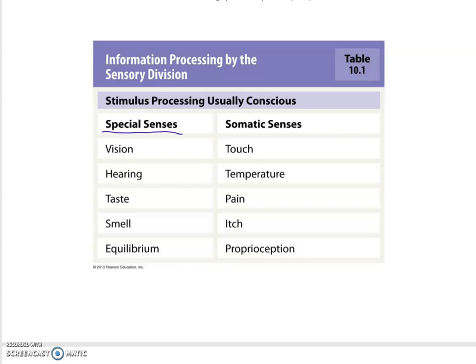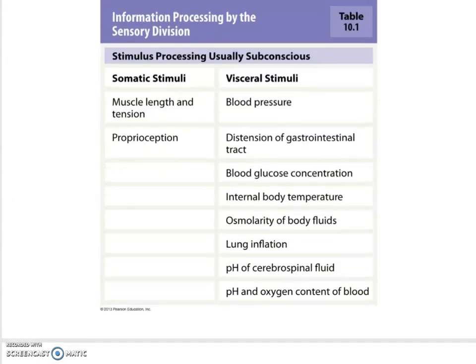The special senses are vision, hearing, taste, smell, and equilibrium. The somatic senses are body-wide senses that have no specialized location — they're all over: touch, temperature, pain, and proprioception. More somatic stimuli include muscle length and tension. Proprioception is the sense of body positioning. Visceral stimuli come from within your body, and typically you are not aware of them — parameters such as blood pressure, distension of your GI tract, blood glucose concentration, internal body temperature, osmolarity, lung inflation, pH, or oxygenation levels.